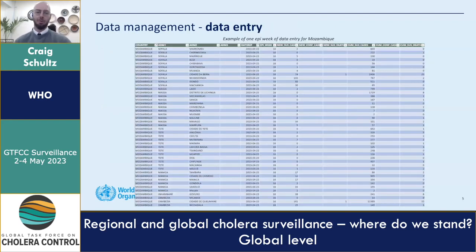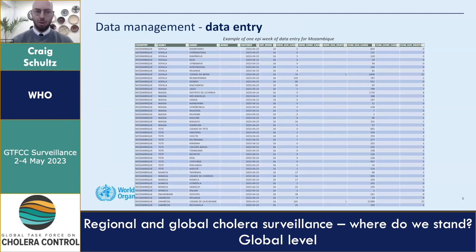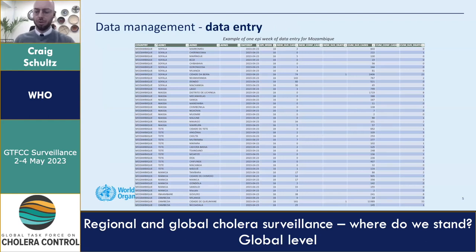Let me show you what our online entry form looks like. This is an example of one epi week for Mozambique. Mozambique gives us really good data — this is 53 rows of data entered in epi week 16, all the way down to the admin two levels. The left-hand column is Mozambique, then we have the admin one level, the province, and then the district level. It's a lot of work to do every week, but we make sure we get it done, and it makes for a better analysis.